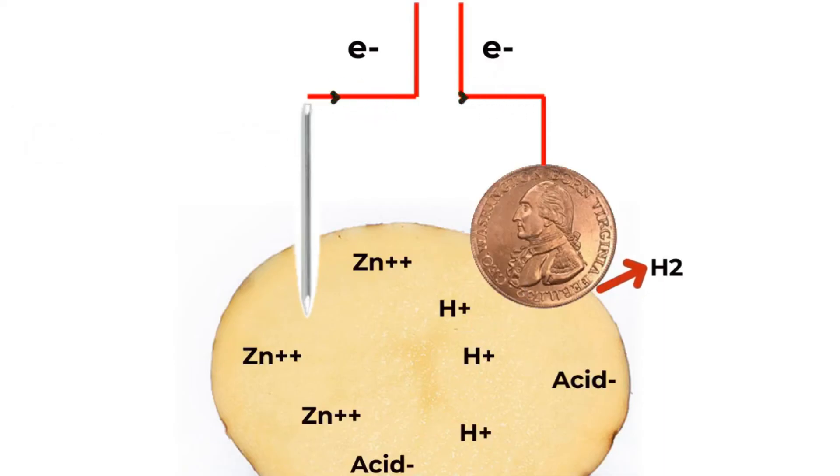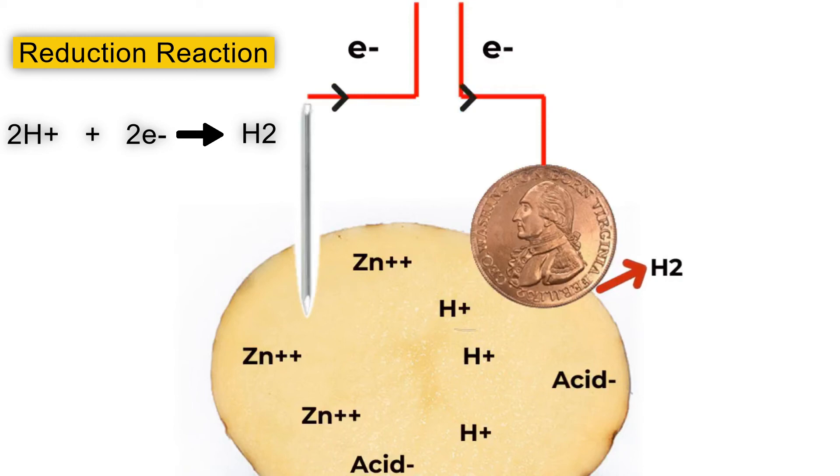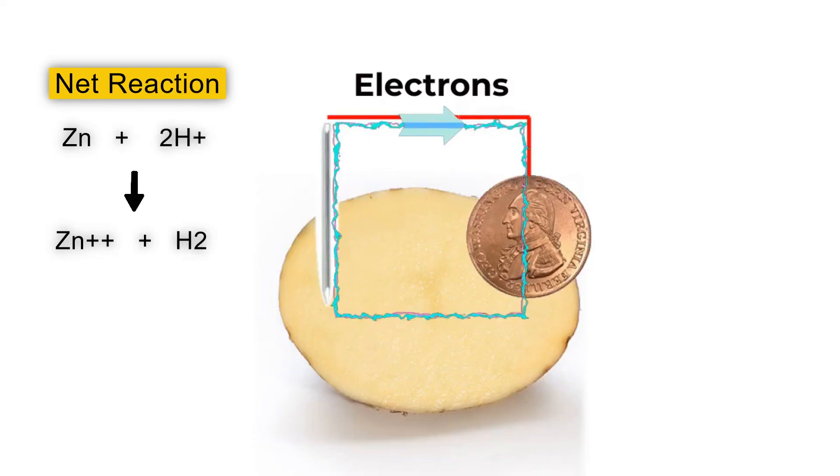This reaction reduces the number of electrons at the copper electrode, causing more electrons to flow from the zinc electrode to the copper one. This cycle completes the circuit and can generate electrical energy. The net reaction of these chemical reactions is shown here.